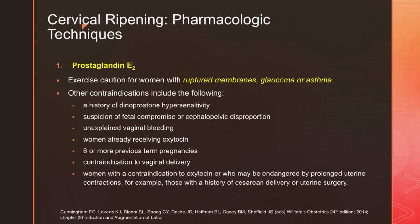We exercise caution in the use of dinoprostone for women with ruptured membranes, glaucoma, or asthma. Other contraindications include a history of dinoprostone hypersensitivity, suspicion of fetal compromise or CPD, unexplained vaginal bleeding, women already receiving oxytocin, six or more previous term pregnancies, contraindication to vaginal delivery, or women with a contraindication to oxytocin or who may be endangered by prolonged uterine contractions — for example, those with a history of caesarean section or uterine surgery.